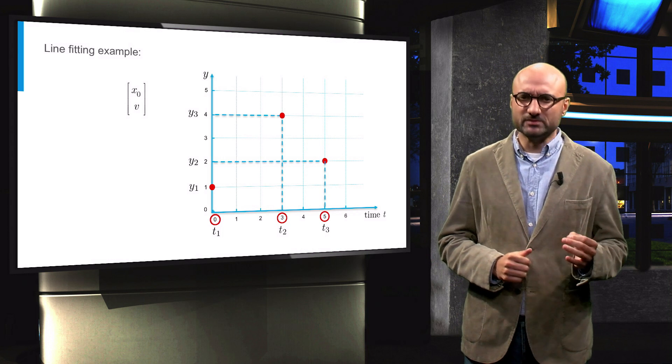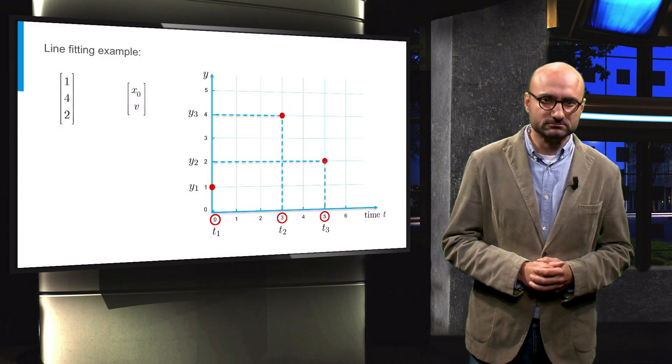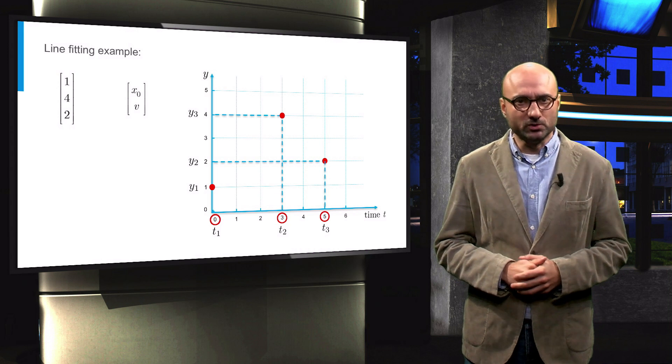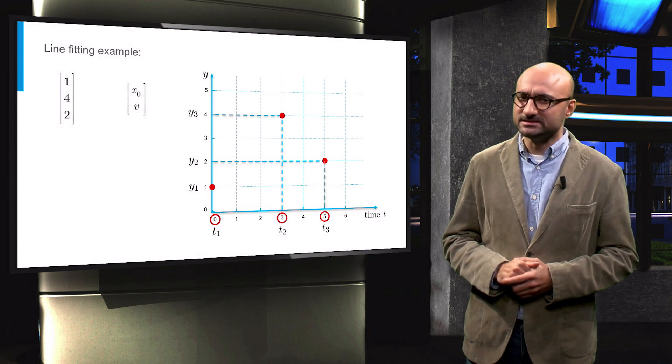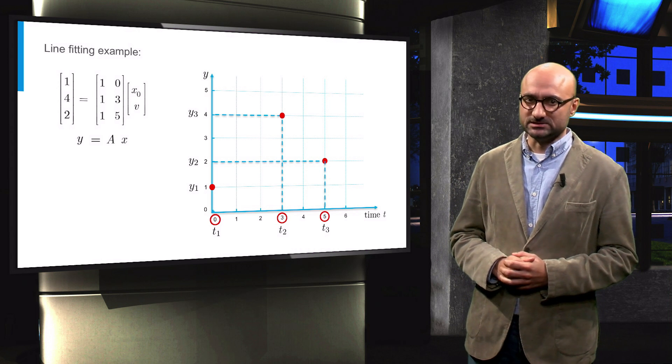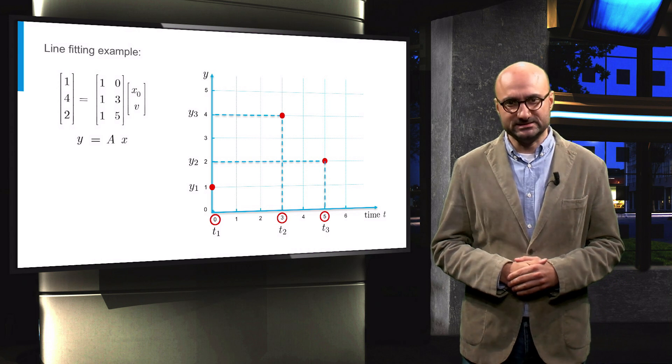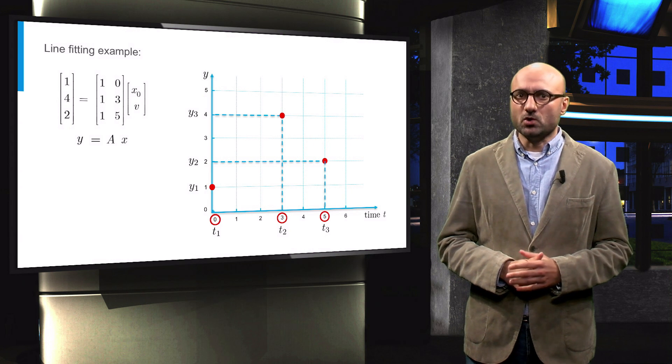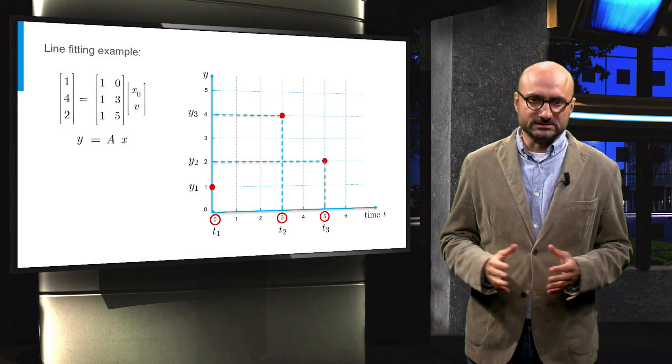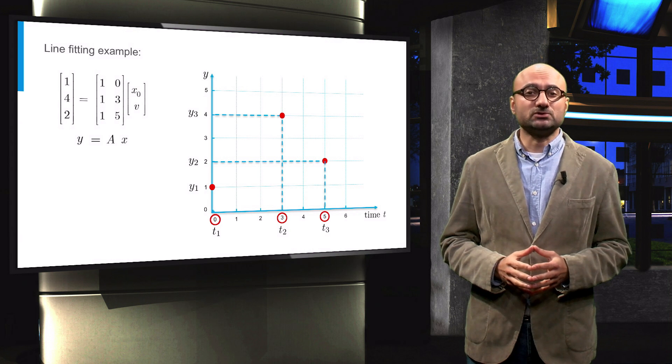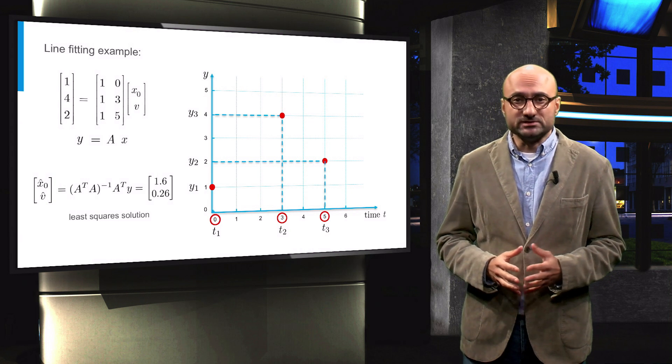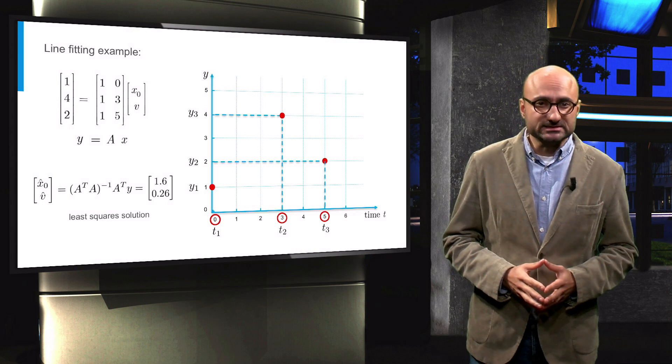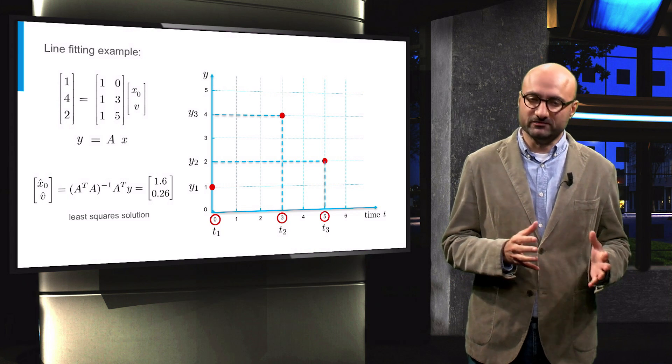We have three observations and two unknowns, and by now, you all know that the observation equation can be written for this problem as this system of linear equations, y equals Ax. The system is over-determined and inconsistent, and the least-squares solution for this system can be computed, and it gives us 1.6 and 0.26 estimate of x0 and the velocity v.